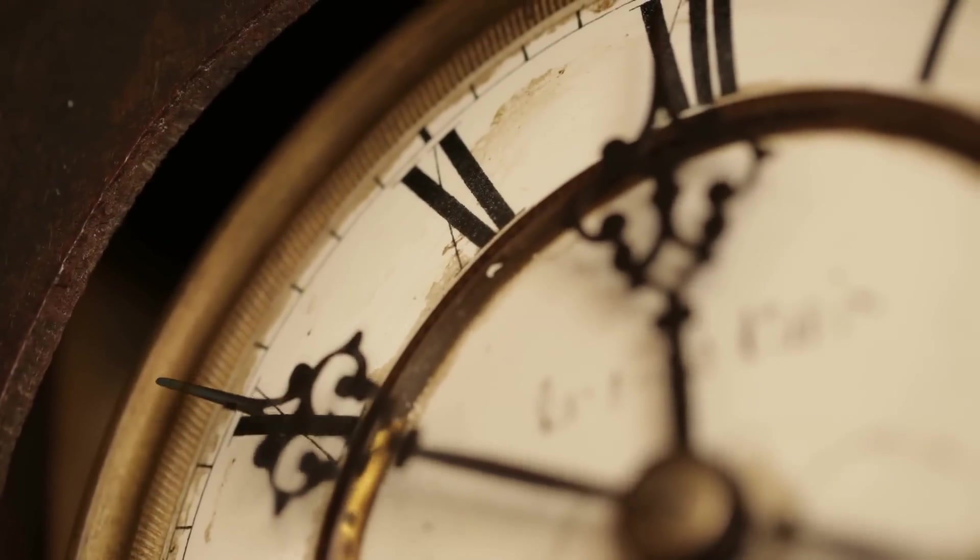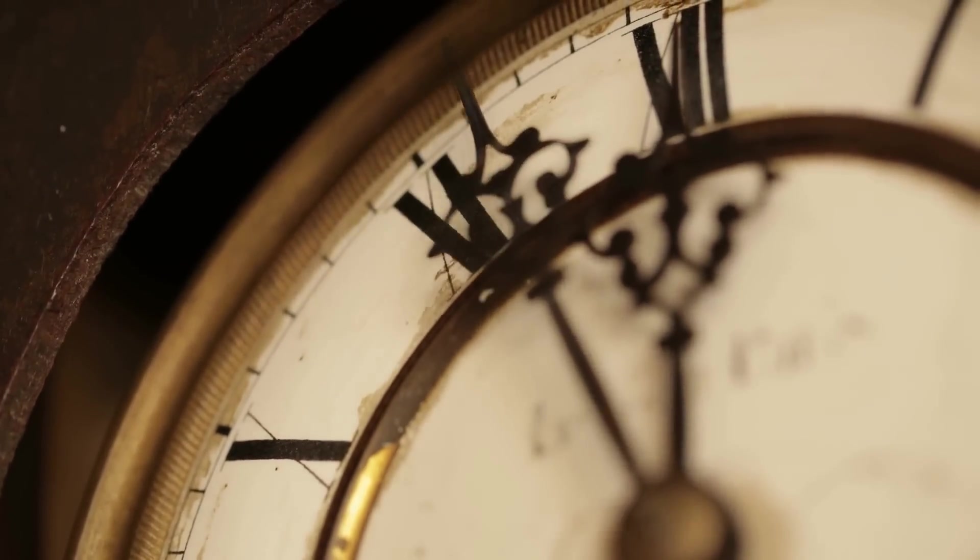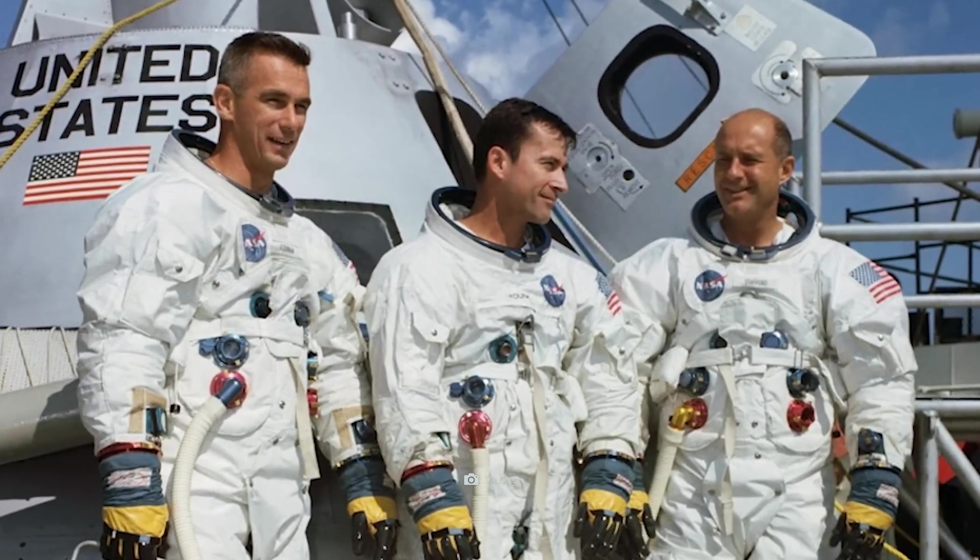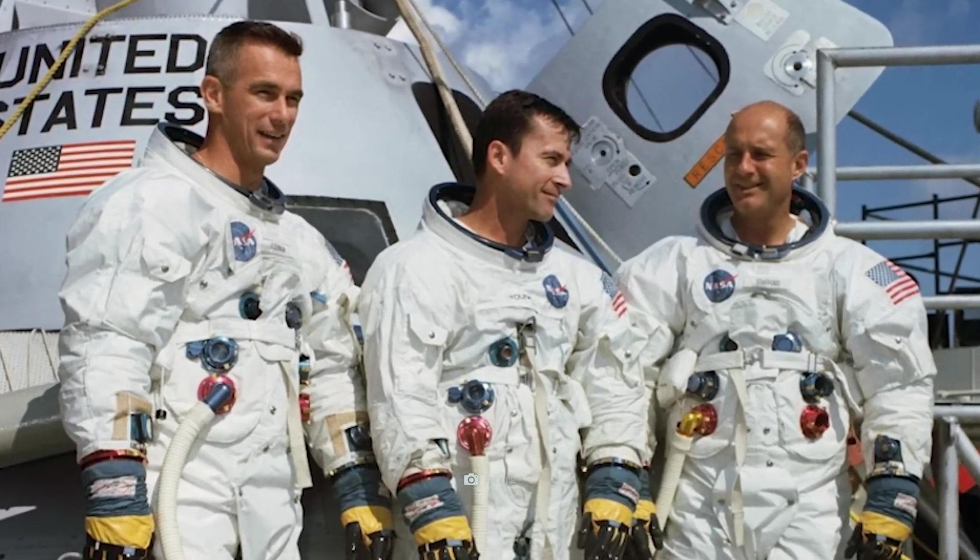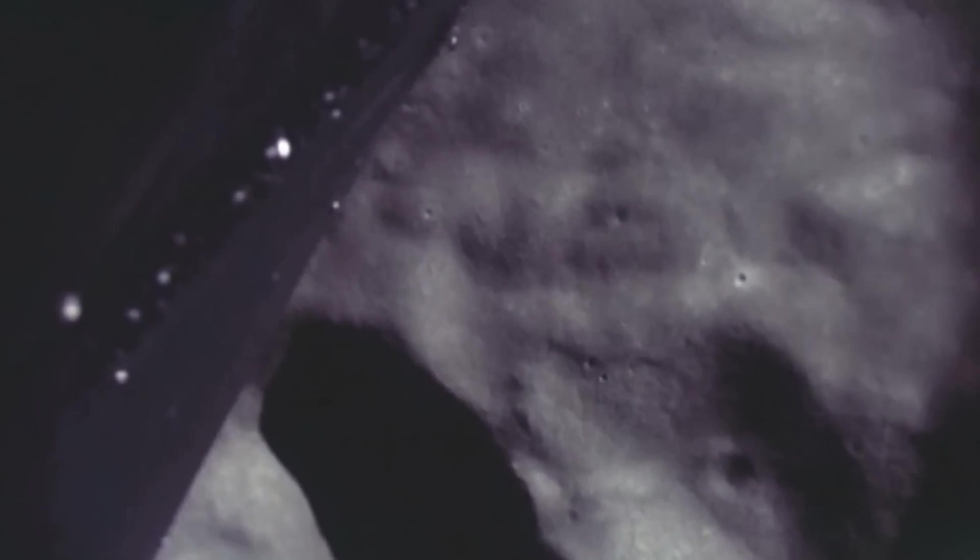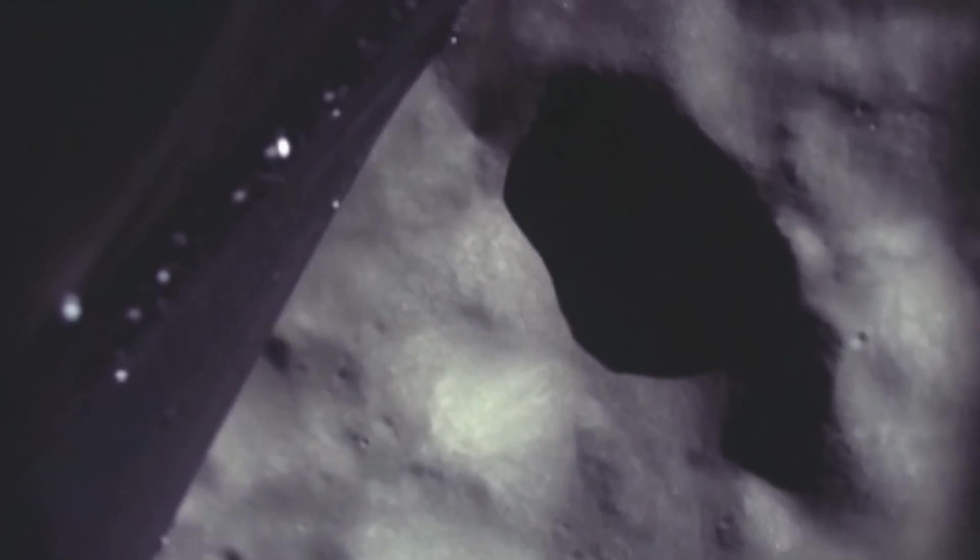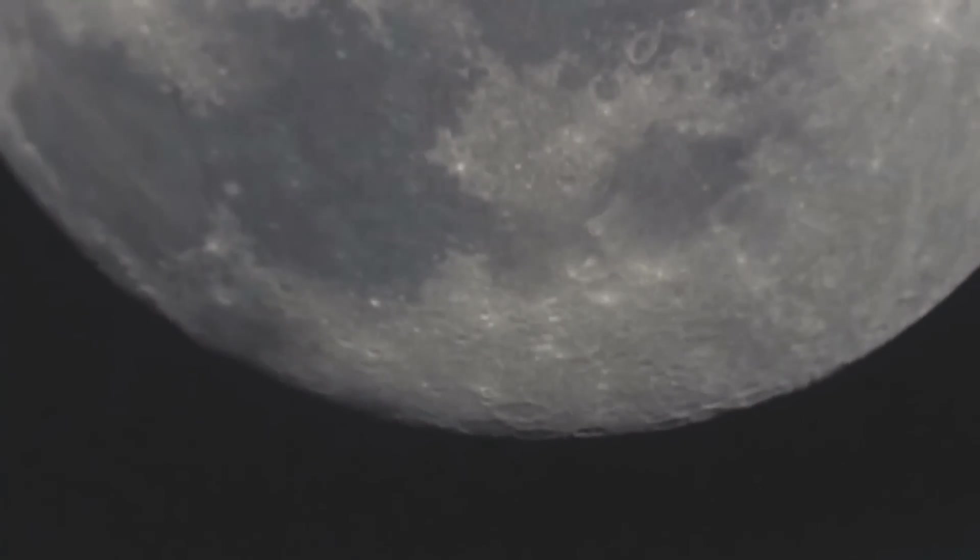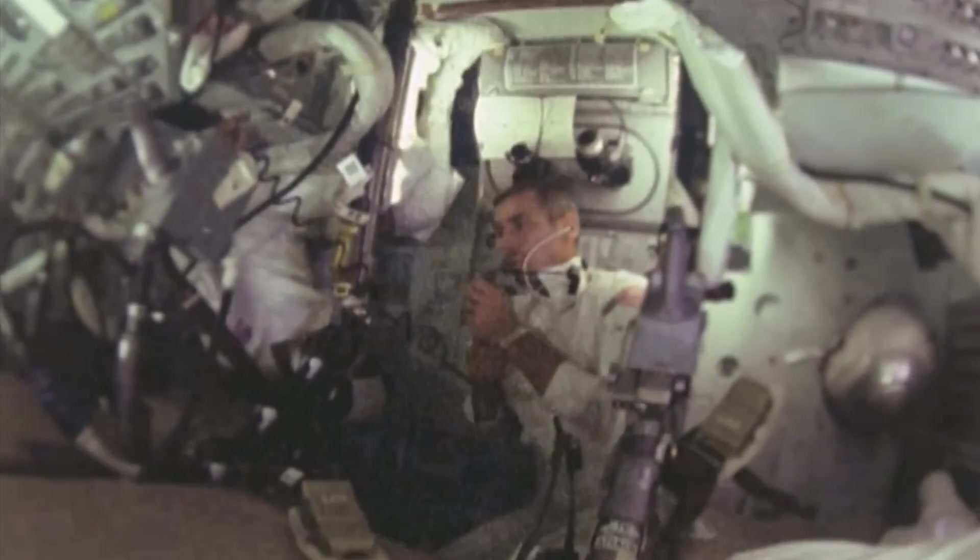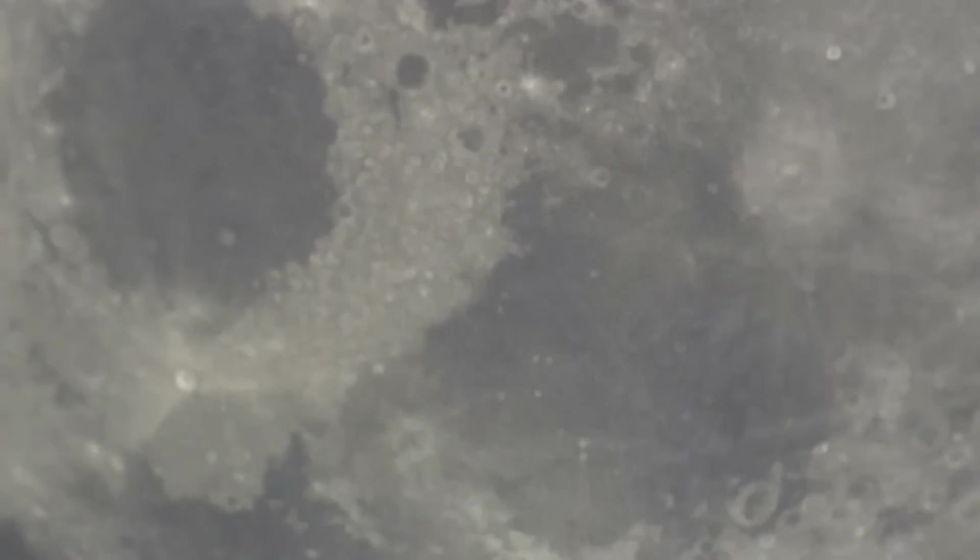Departing into space on May 18, 1969, astronauts Eugene Cernan, Thomas Stafford, and John Young dedicated themselves to the task of testing the various maneuvers of the lunar module under real conditions. Officially, the endeavor was a complete success. However, many decades later, it turned out that the men were confronted with a phenomenon at the time that still causes great puzzlement.